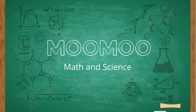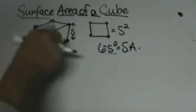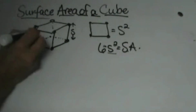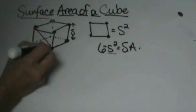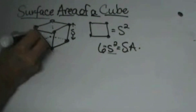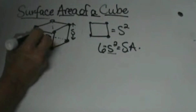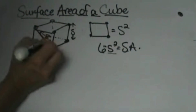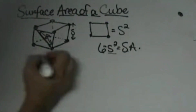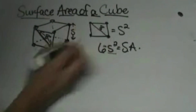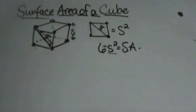But this time instead of being given a length of one of the sides, let's say you are given the length of the diagonal. Let's say that the diagonal measures 8 — the diagonal of one face. So we are looking at this measurement right here as being 8. How would we find the surface area?